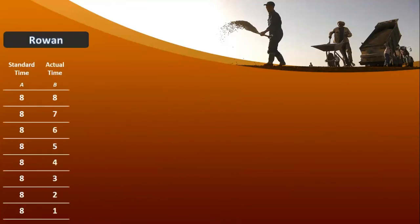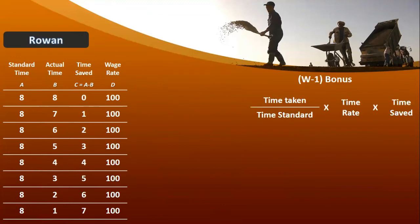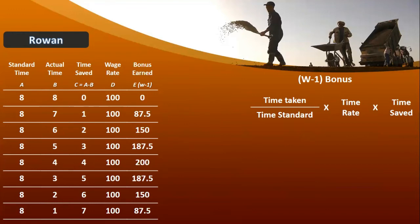Ab Rowan pe aate hain, Rowan method pe discuss karte hain. Same condition: standard time, actual time, time saved, aur wage rate — yeh by default same chart ko aapne copy paste kiya hai. Ab bonus ki calculation hai: time taken divided by standard time, multiplied by time rate, multiplied by time saved. First condition: time save 0, time taken 8 hours. Actual time 7: 7 divided by 8, multiplied by 100 rupees, multiplied by 1 hour = 87.5.